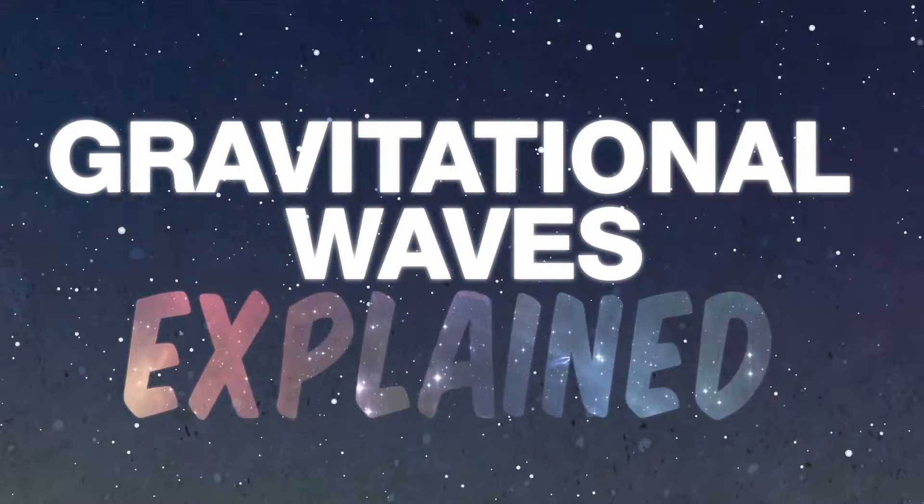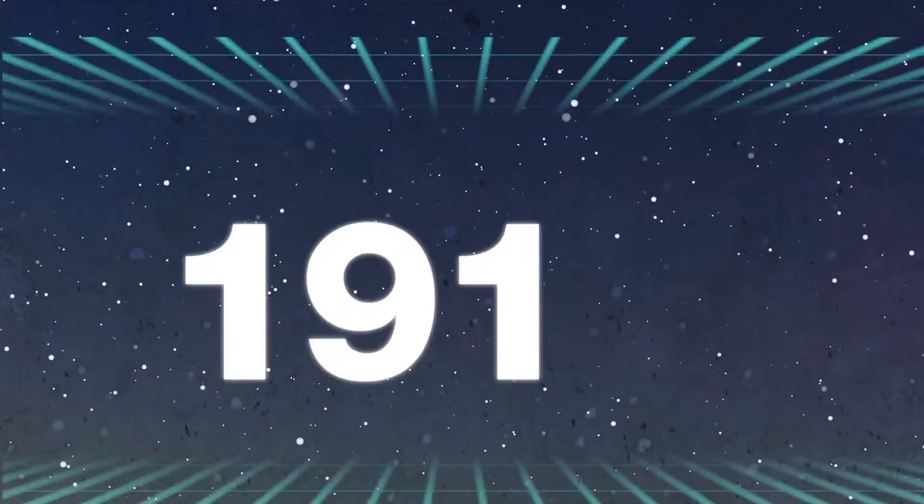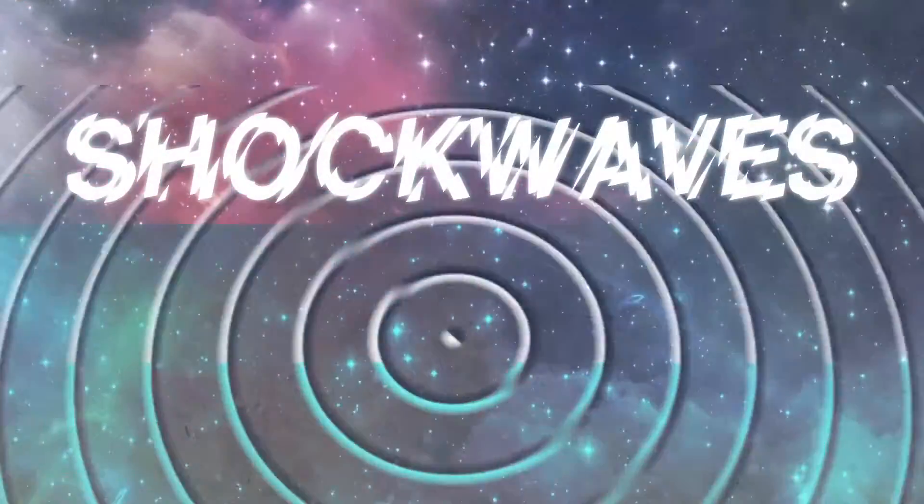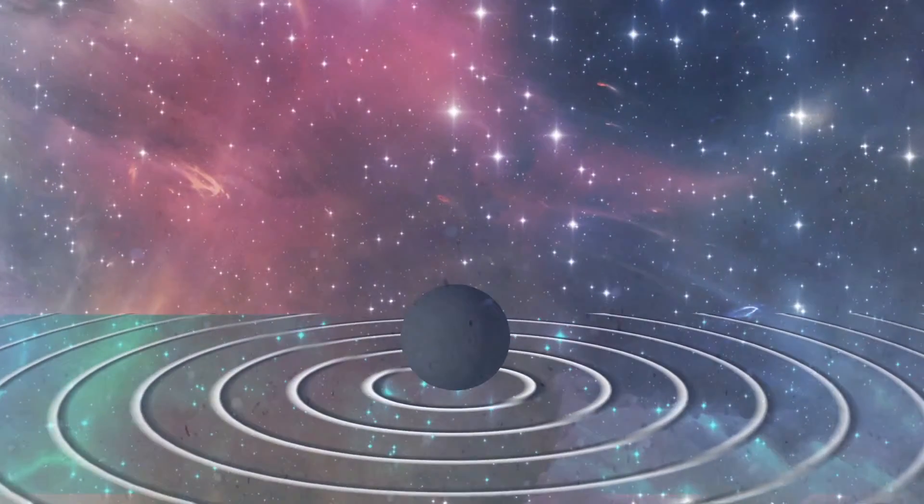Gravitational Waves Explained. In 1916, Albert Einstein made an amazing prediction that space and time are rippling with shock waves caused by the motion of massive objects.